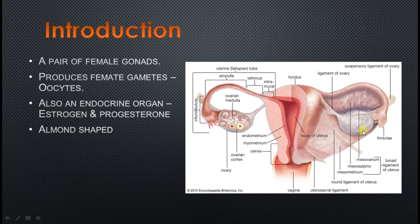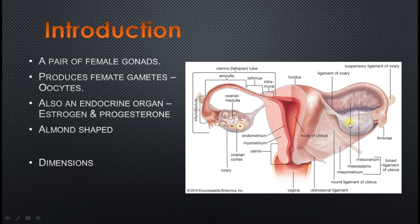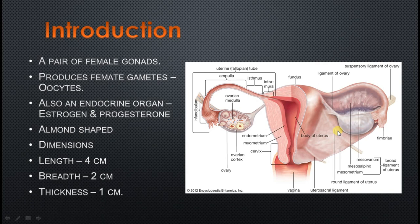The ovary is roughly almond-shaped and slate greyish in colour. Only in pre-pubertal age, before the onset of menarche, the surface will be smooth. But once puberty begins from menarche, the surface becomes irregular because during every monthly cycle the surface is ruptured to release the oocyte along with its supporting cells. It is roughly 3 to 4 cm in length, breadth is 2 cm, thickness is 1 cm, and the axis is directed vertically.